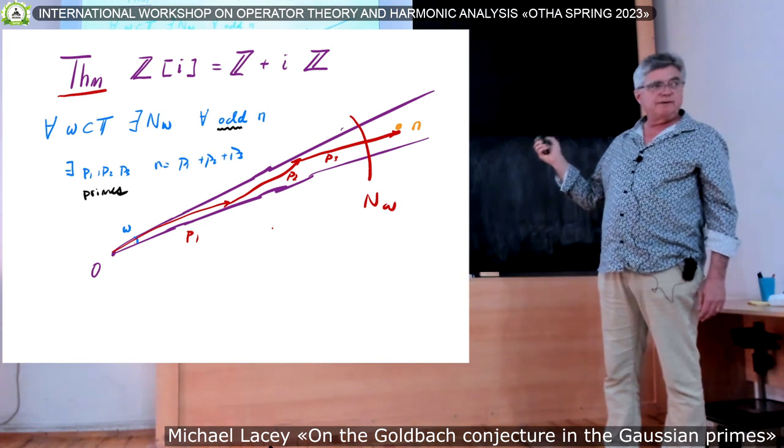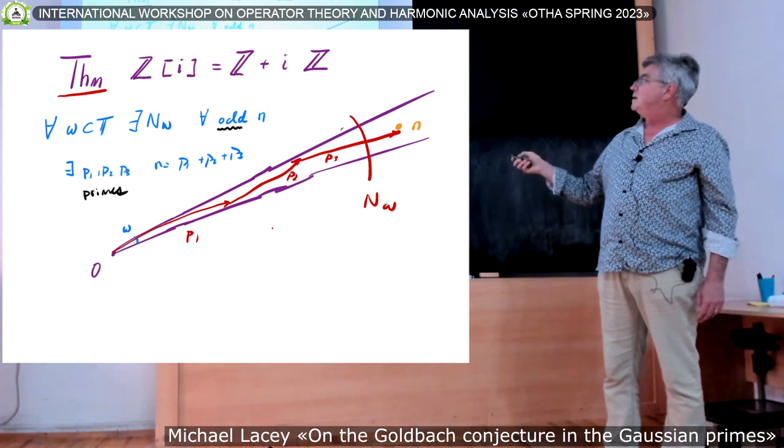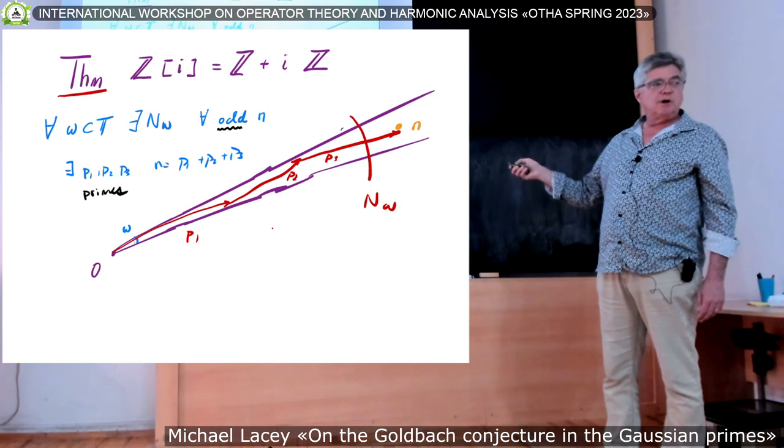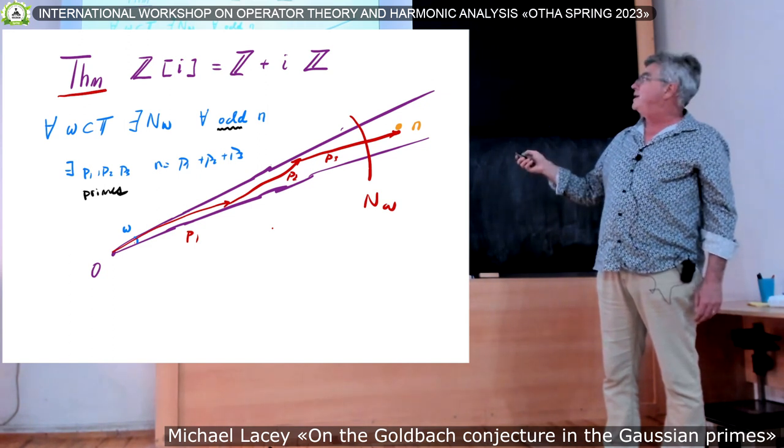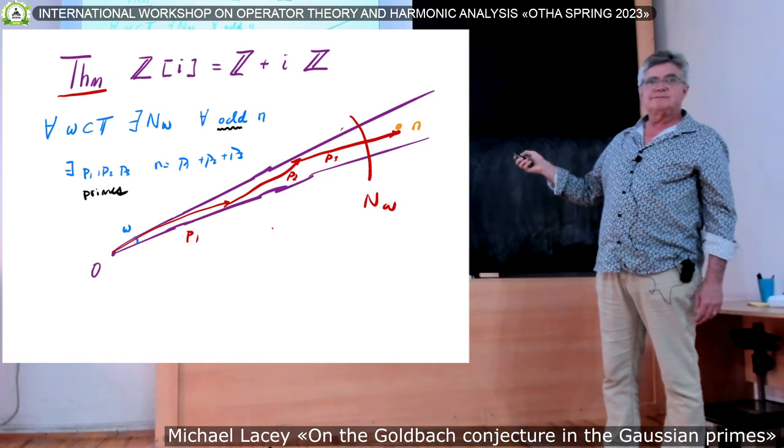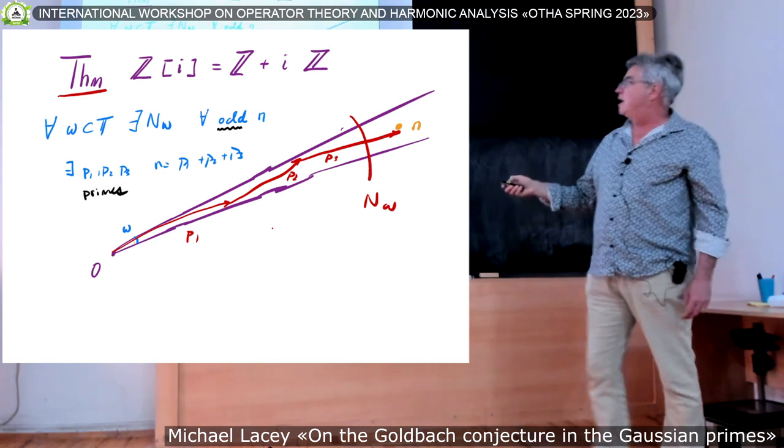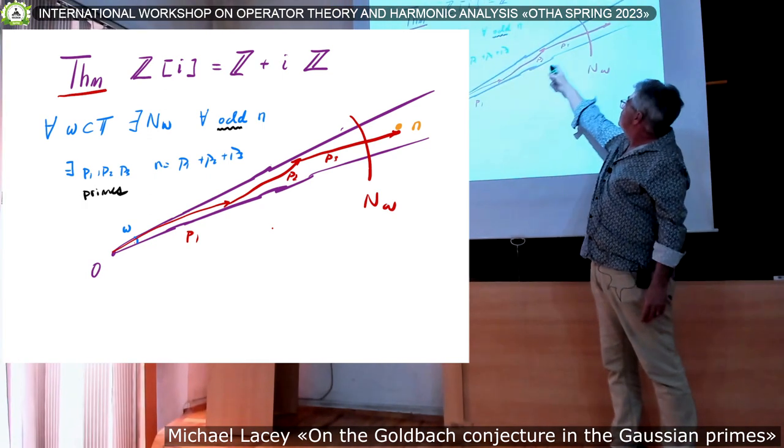It goes out to infinity. And then there is a finite number as a function of our arc. So that if you go out here, and you select an odd integer, it is the sum of prime plus prime plus prime.